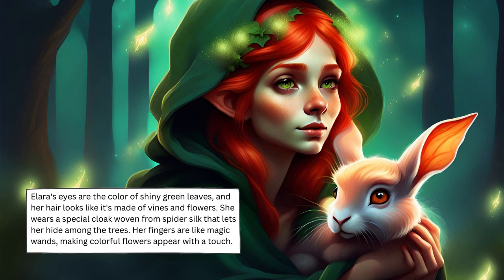Ilara's eyes are the color of shiny green leaves, and her hair looks like it's made of vines and flowers. She wears a special cloak woven from spider silk that lets her hide among the trees. Her fingers are like magic wands, making colorful flowers appear with a touch.